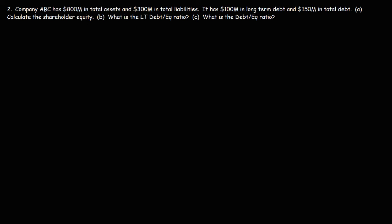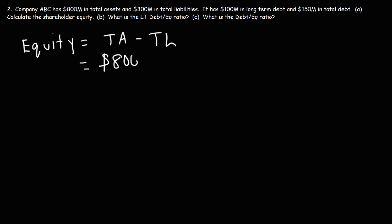Part A: calculate the shareholder equity. The shareholder equity, or simply equity, is the difference between the total assets and the total liabilities. This company has $800 million in total assets and $300 million in total liabilities, so the shareholder equity is $500 million.